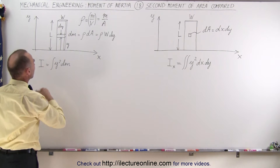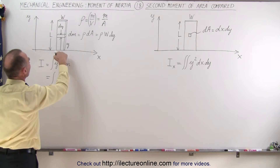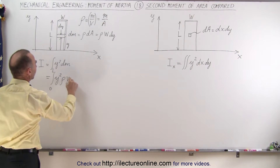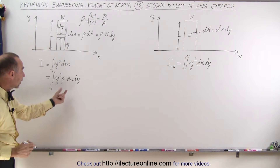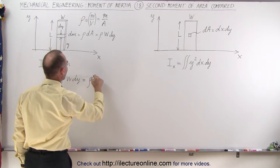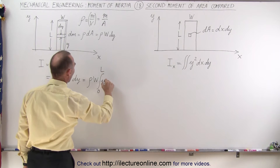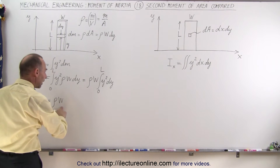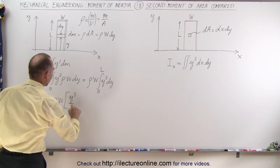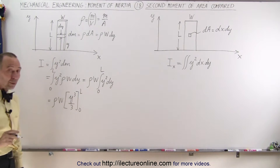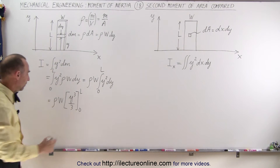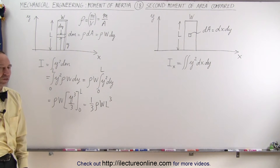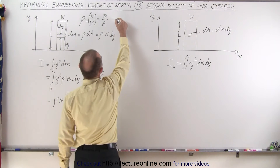Now we calculate the moment of inertia, which is equal to the integral of y² dm. This means we integrate from 0 to L of y² times density times width times dy. Since density and width are constants, we pull them outside the integral sign: density times width times the integral from 0 to L of y² dy. Integrating gives us density times W times y³/3 evaluated from 0 to L, which gives us (1/3) × density × W × L³.